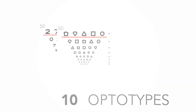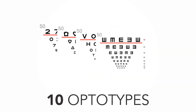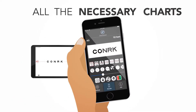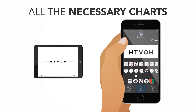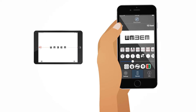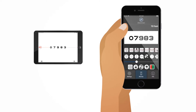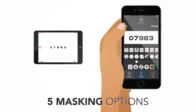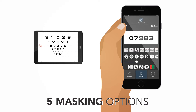The full range of optotypes provides you with the necessary charts for any type of patient. Use any one of the five masking options to isolate letters horizontally, vertically, singly, or to view the full chart.